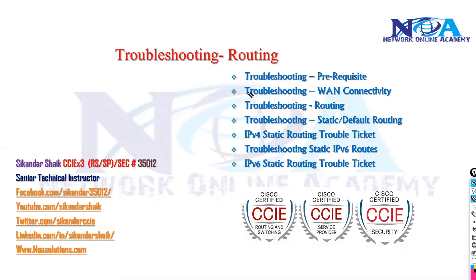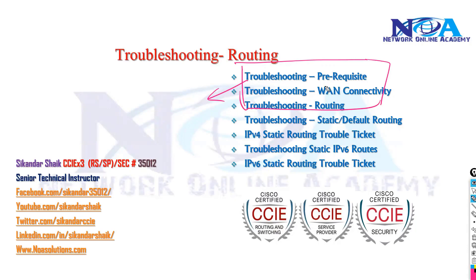In this section we will try to get into static route troubleshooting. If we just quickly recollect what we discussed in the previous sections, we started with understanding some of the prerequisites we need to know. We also have seen what are the things we need to keep in mind while troubleshooting WAN connectivity.